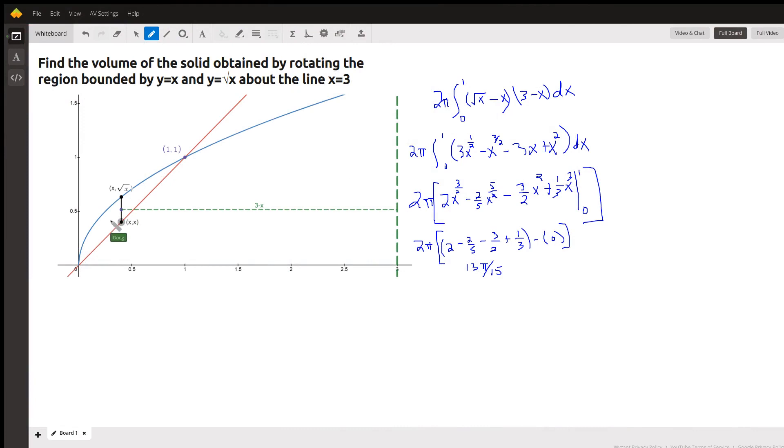Okay, this graph right here is the graph of y equals square root of x, the blue graph. The red graph is the line y equals x.